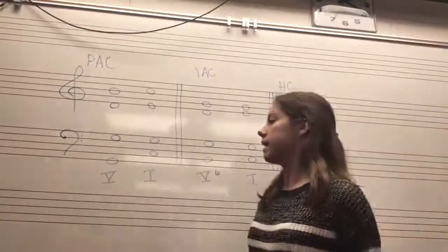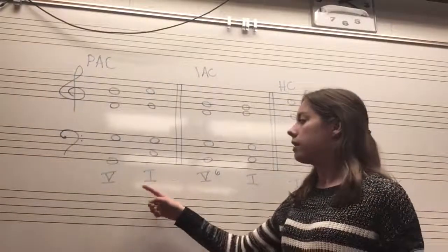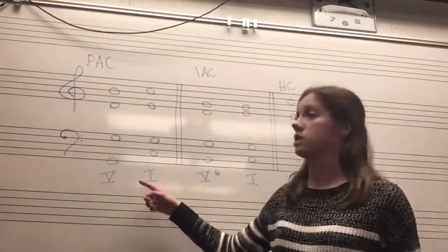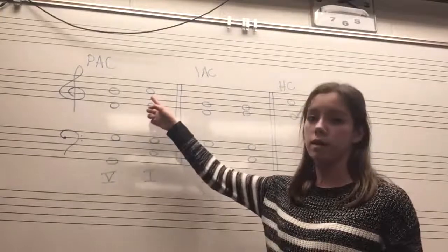In a perfect authentic cadence, you have a V chord followed by a I chord. The V and the I chord are both in root position, and the soprano in the I chord ends on DO.